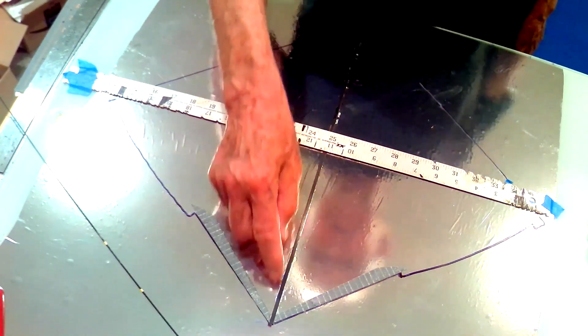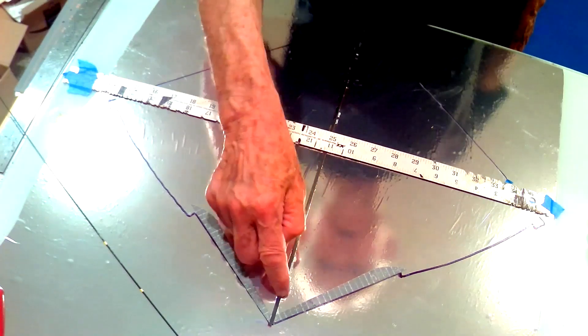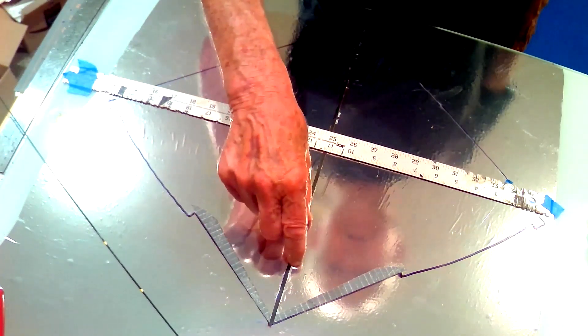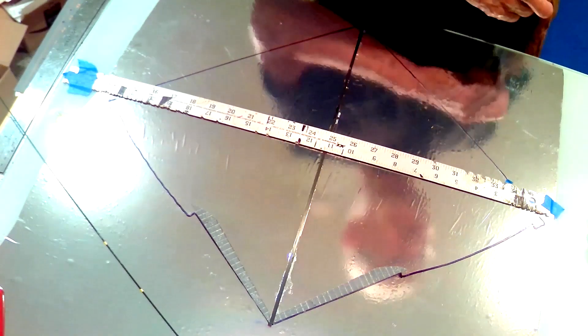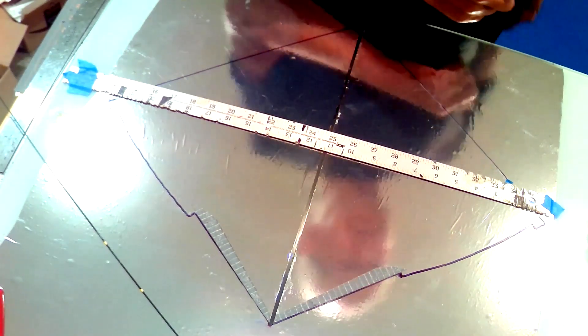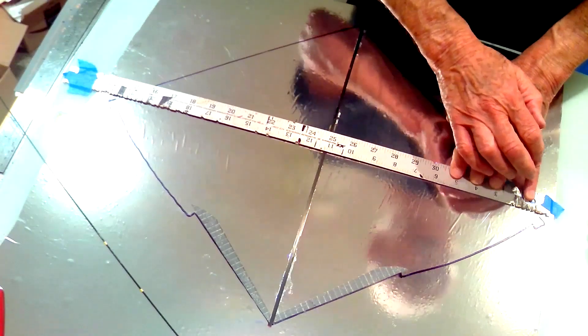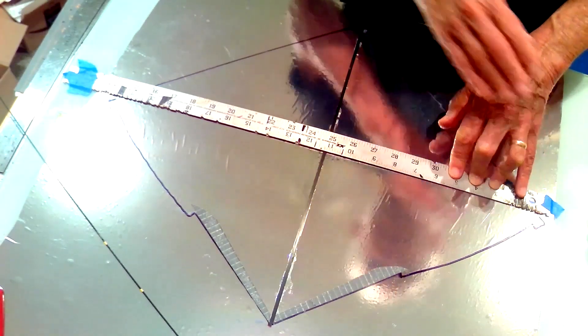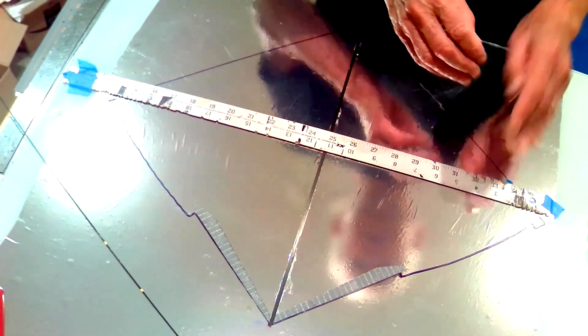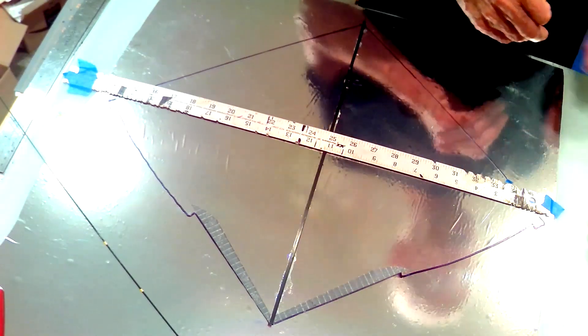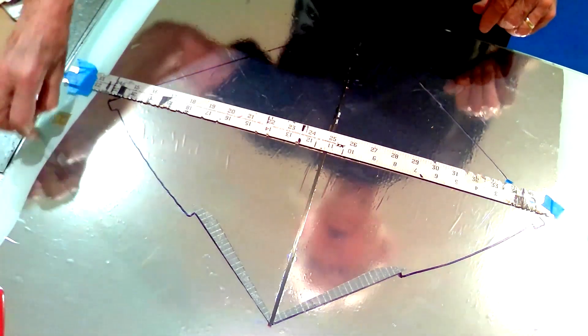You can see here where some of the glue kind of wrinkled up the sail behind it, which is a typical reaction of these polyfilms with contact cement. It often will wrinkle a little bit. Sometimes it will release as the glue dries, sometimes it won't. But I'm not worried about that.